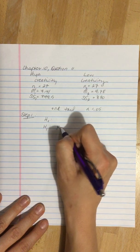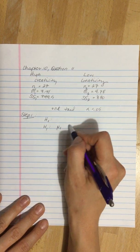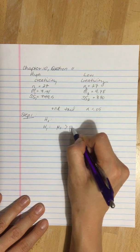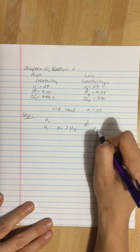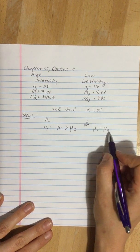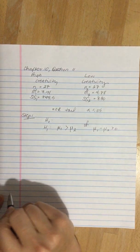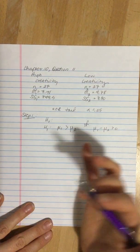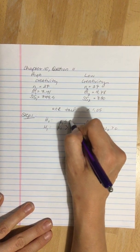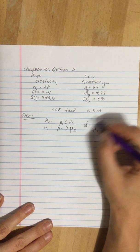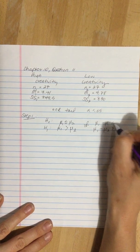So we're expecting that the population of high creativity people are going to have a higher score, they're going to be greater than the population of low creativity. Alternatively we could write this as mu1 minus mu2, mu1 is supposed to be bigger than mu2, and so this would be greater than zero. The null is mutually exclusive and exhaustive. So mu1 would be less than or equal to mu2, or if we use this way of writing it out, mu1 minus mu2 is less than or equal to zero.